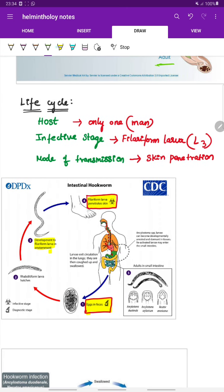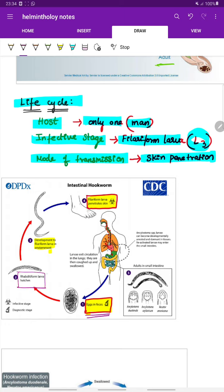Now coming to the life cycle. It has only one host, that is the man. Infective stage is the filetiform larva L3 stage. Mode of transmission is through skin penetration. Firstly the eggs from the feces of humans are passed in the soil, and in the soil the rhabditiform larva hatches and develops into the filetiform larva in the environment.